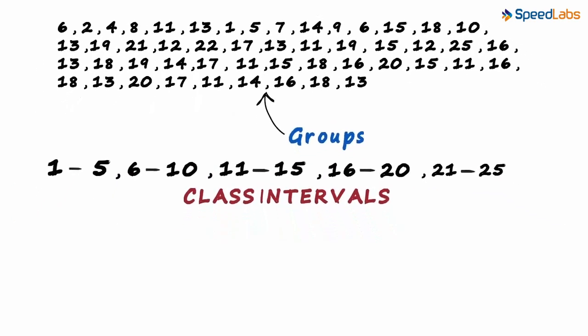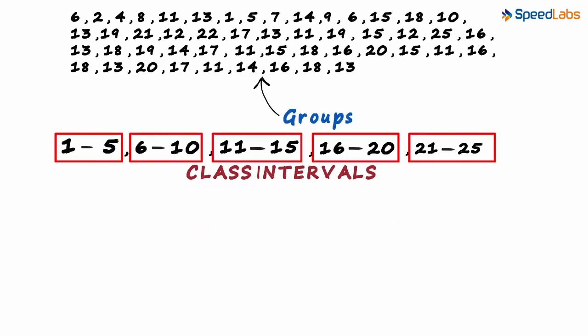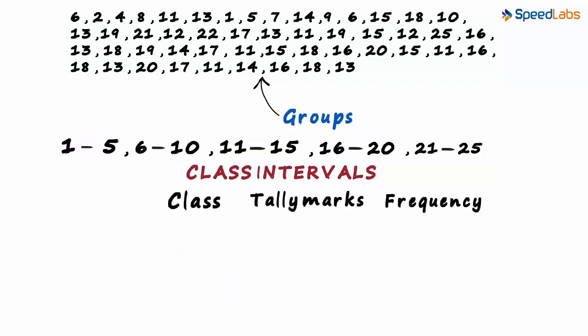Let's zoom out. The class intervals can even be called class. So we find the frequency of each class instead of finding frequency of each number. We make columns of class, tally marks, and frequency.